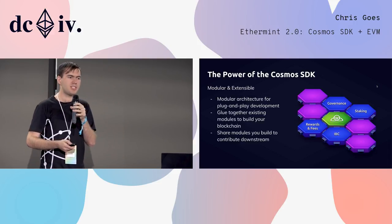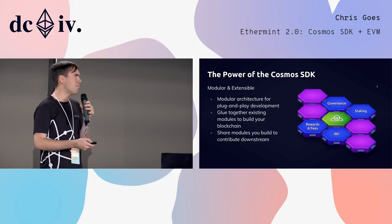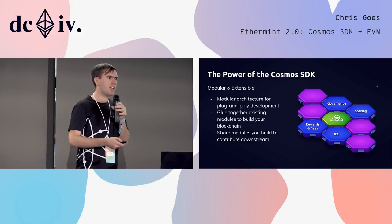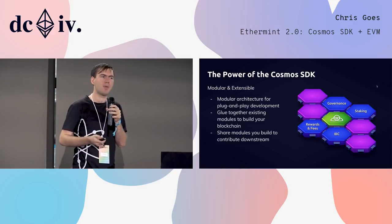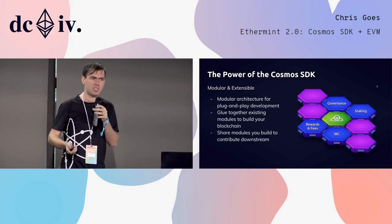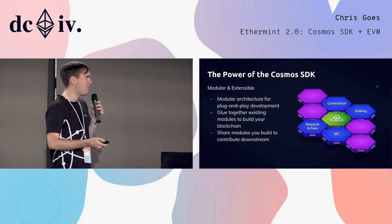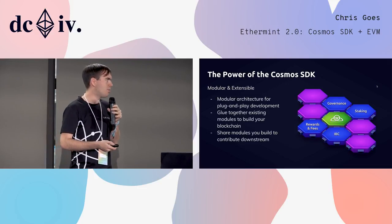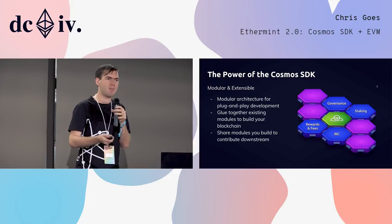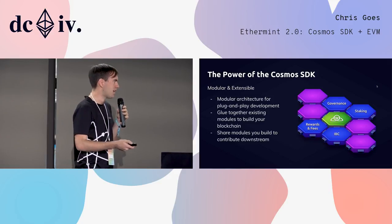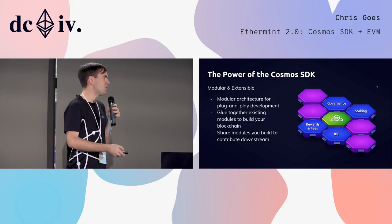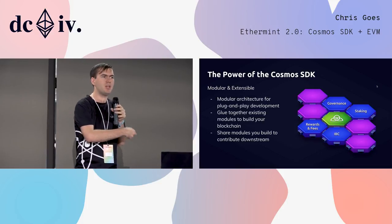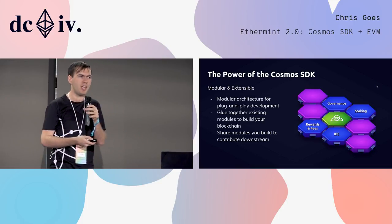In order to do this, the SDK needs to be modular. We've built a system by which we can build particular components that you might want in your state machine as modules. Eventually, not only us but many other people who are building application-specific blockchains can build modules as we've built for governance, staking, fee distribution, and inter-blockchain communication.